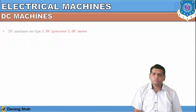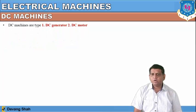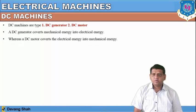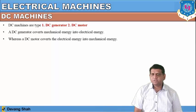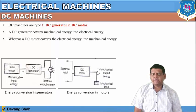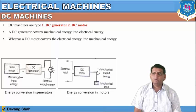So first, what are DC machines and how do they look? There are two types of DC machines we are going to discuss: DC generator and DC motor. The DC generator converts mechanical energy into electrical energy. From this diagram you can see the prime movers will give the mechanical energy, and that mechanical energy is going to be converted into electrical energy by means of the DC generator.